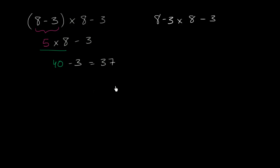The convention is to do your multiplication first. So you're actually going to multiply the 3 times the 8 before you subtract it from this 8 and then before you subtract this 3.